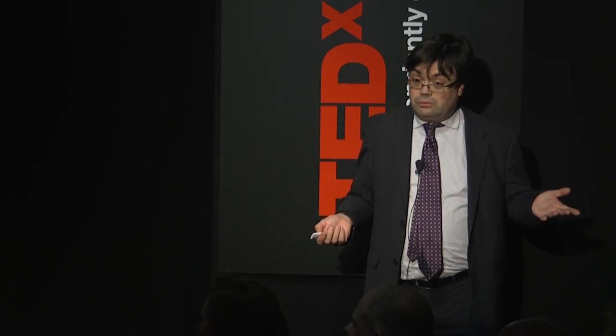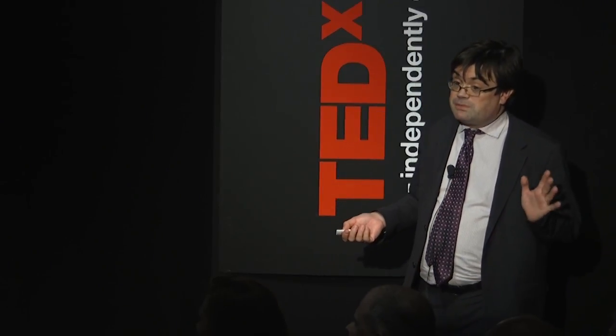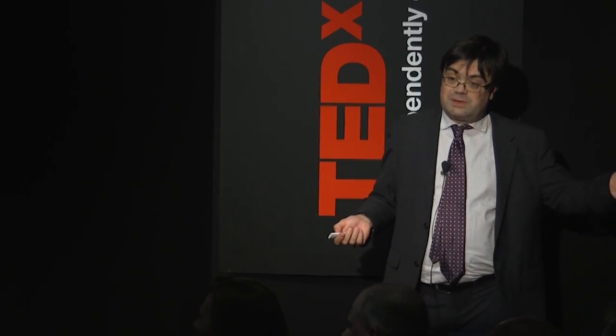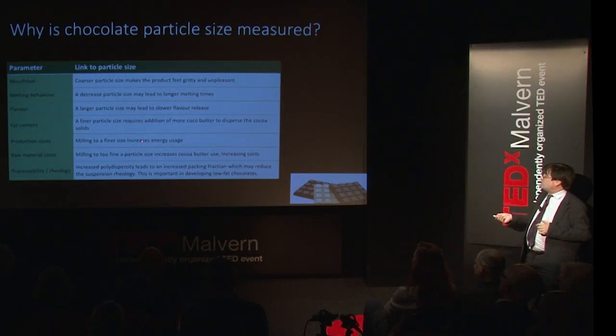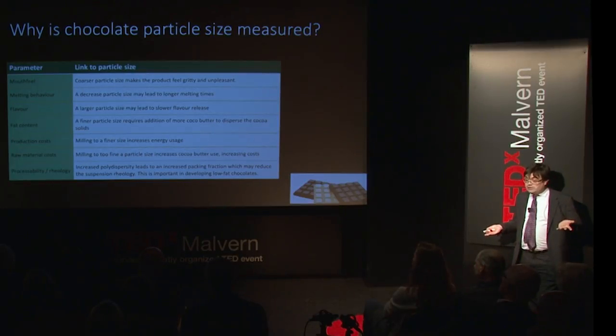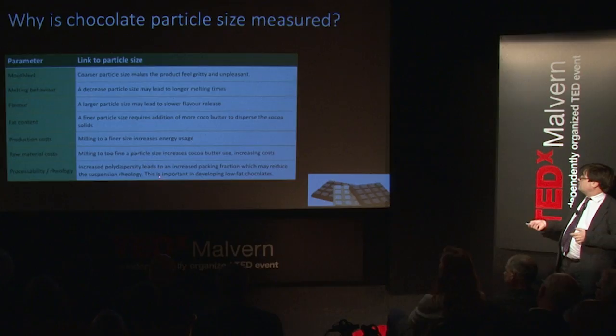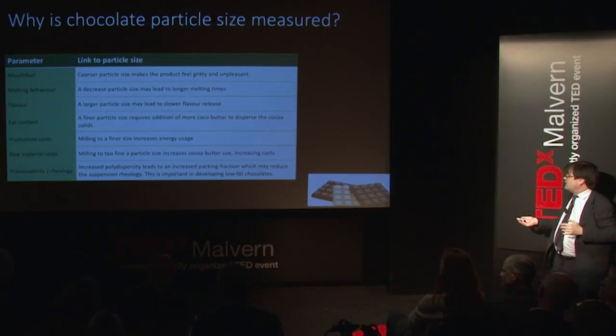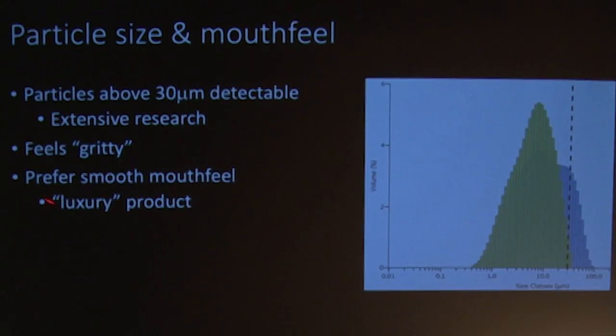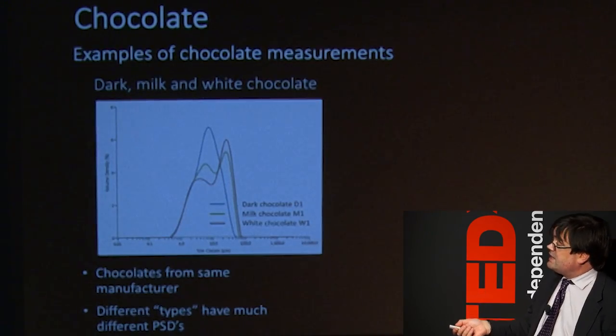There's a balance — you don't want to go too fine, because you need more cocoa butter to disperse the cocoa solids, and cocoa butter is the most expensive ingredient. If you go too fine, the chocolate costs more to manufacture. So it's a fine line between too coarse — which tastes unpleasant — and too fine — which is too expensive. Milling finer also takes energy. A wide size distribution may also reduce the viscosity of the suspension, which matters for low-fat chocolates.